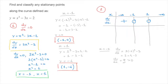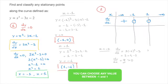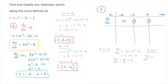Next, I determine the sign of dy/dx between negative 1 and 1. Choosing x equals 0 for simplicity: dy/dx equals 3 times 0 squared minus 3, which equals negative 3. Since this is negative, dy/dx is negative for all x between negative 1 and 1, so I put a minus sign in the table.